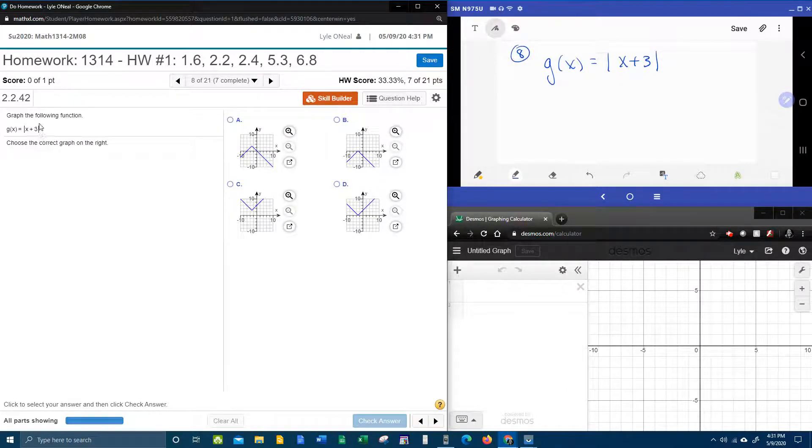Here they give us an absolute value function. I guess it would be nice to know that an absolute value graph always makes a V. And so if you notice, we have four V's to pick from.